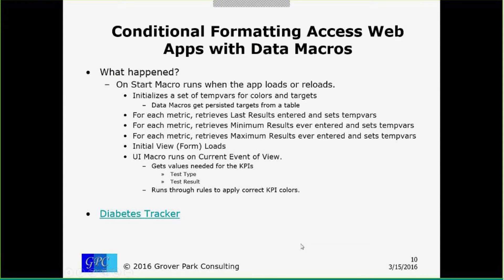The OnStart macro runs when the app loads or reloads. It initializes the TempVars — there are TempVars for both colors and targets — and that allows me to change the target level and the colors in those KPIs. So if I want to change from red, yellow, green to another set of colors like purple, orange, and brown, I can do that and immediately the view will update with those new colors. The important thing is those targets are persisted in a table used to initialize each target at startup.